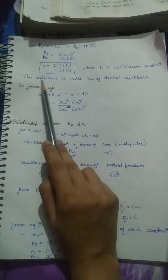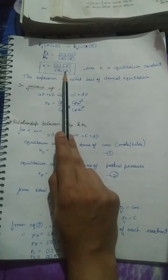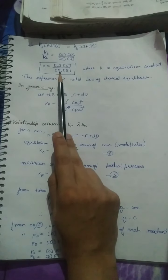This expression is the law of chemical equilibrium. We have concentrations of C, D, A, and B all expressed in mole per liter.